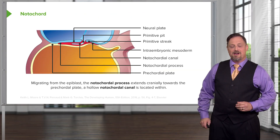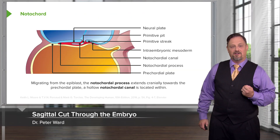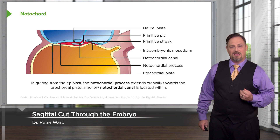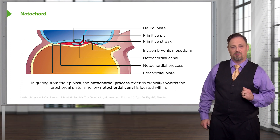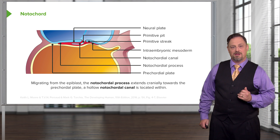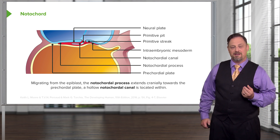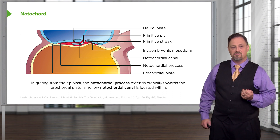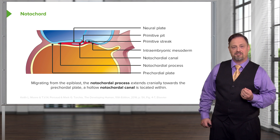We have now taken a sagittal cut through the developing trilaminar embryo. We can see the ectoderm colored in blue, the endoderm in yellow, and the mesoderm in between in red. You can see that extending from the primitive streak closer to the precordal plate, we have the notochord and notochordal process.